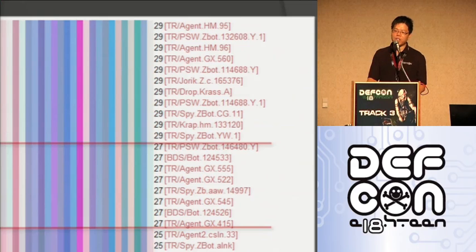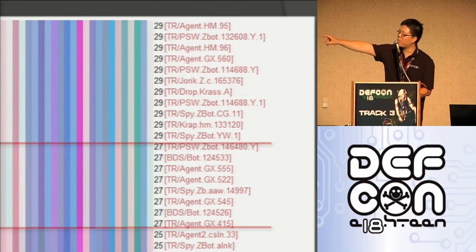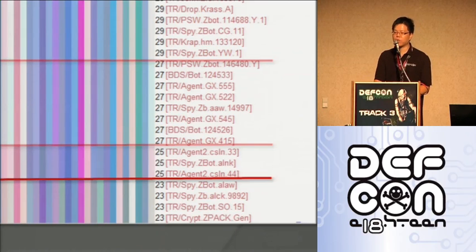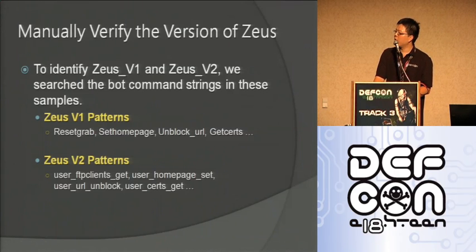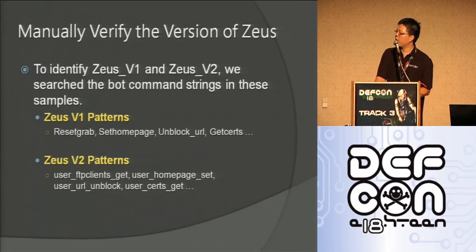All these malware instances happen to belong to the same malware family called zbot — Zeusbot. Even the first upper block is all zbot, and the second block is all zbot — a total of 26 instances. Because there are some zbot variants, instead of only relying on antivirus, we performed manual inspection of our own. We identified different bot commands across the binaries, which allowed us to determine which variants they are.